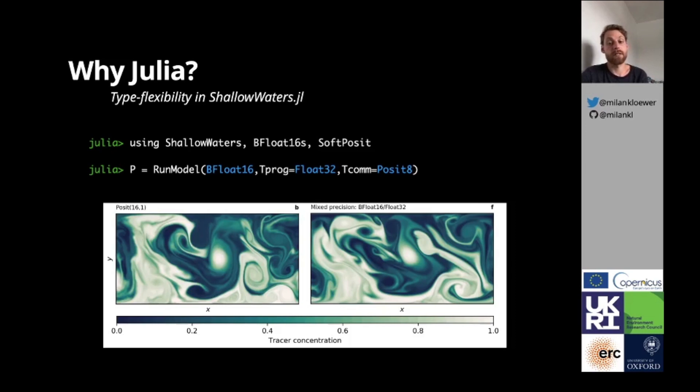On the left, Posit16 was used for all calculations, whereas on the right most calculations were done with BFloat16, but the accuracy-critical parts are done with Float32, an approach that is often called mixed precision.